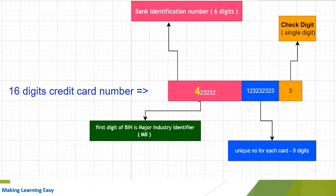Then nine digits are the unique number for each card, and these nine digits are unique to the issuer or the issuing bank. The last digit is the check digit. So we have now seen what details a credit card number contains: the Bank Identification Number (BIN), the Major Industry Identifier (MII), the check digit, and the unique number.